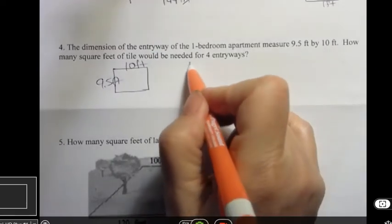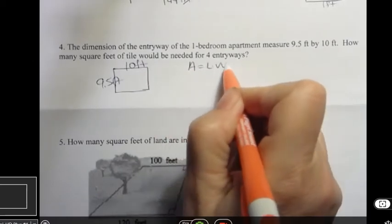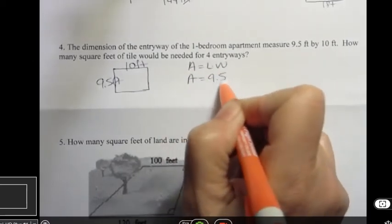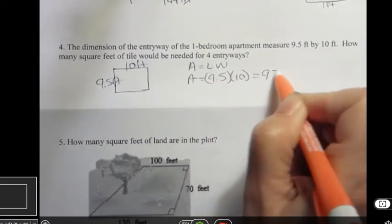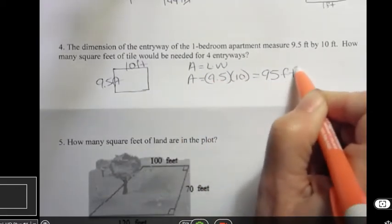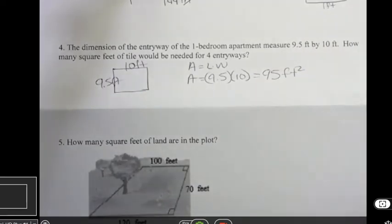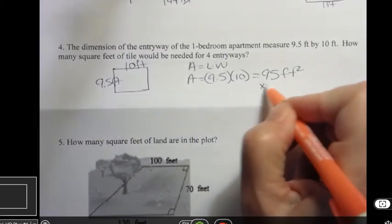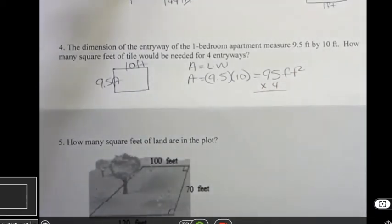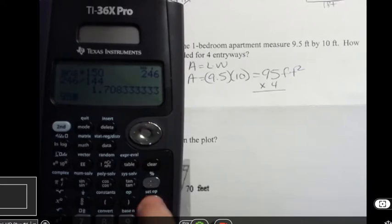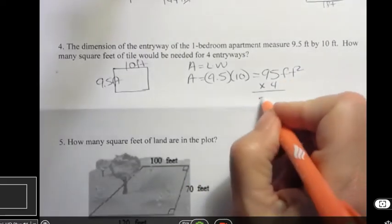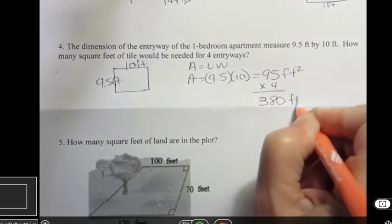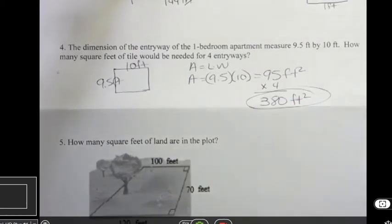Well, I'm just going to find the area, which is going to be length times width. And so that's going to be 9.5 times 10, which is 95, but it's feet squared, because it's always squared when we're doing area. And then if I needed to do four of those, I would just say, well, I need to multiply times four, because I need to do four of those. So 95 times four, and that's 380. So I would need 380 square feet of tile if I was going to do four of those.